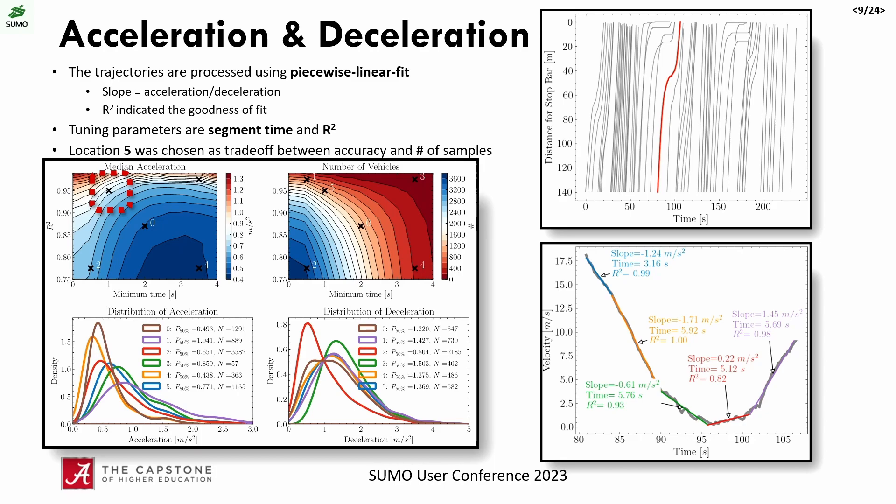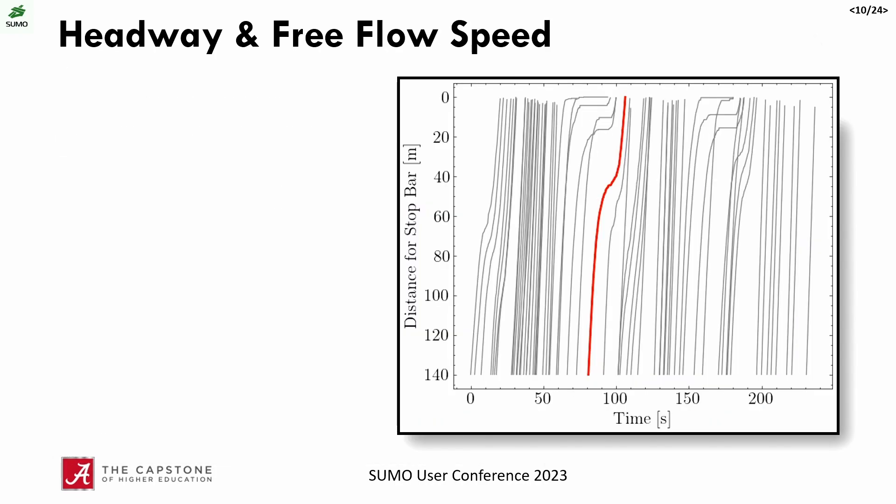Importantly, this gives us two tuning parameters: we can choose accelerations with a low or high R-squared, or a short or long segment time. This creates surfaces for number of vehicles and the actual accelerations that form our distributions. We ultimately chose our operating point on that surface, and these are the different distributions as you move around for different minimum time and different R-squared values. We're also processing the SUMO FCD outputs in exactly the same way to emulate how the radar would behave in SUMO, so we can compare distributions directly.